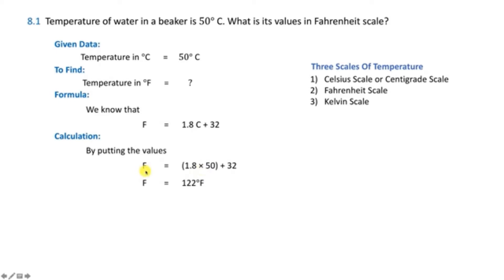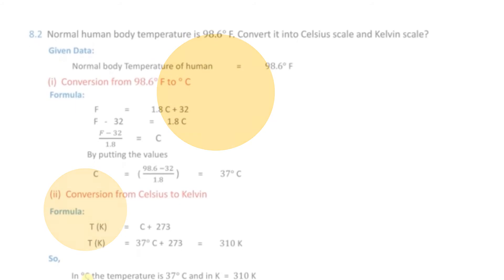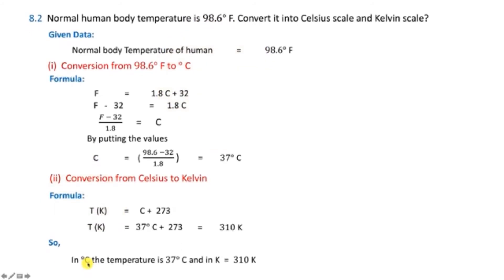For problem 8.2, you are given temperature in Fahrenheit and need to find it in Celsius. Using the formula: F = 1.8 × C + 32, rearranging: F − 32 = 1.8 × C.